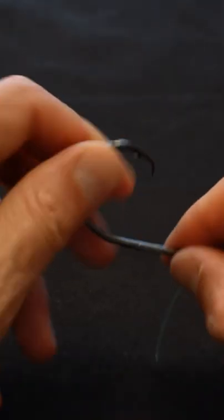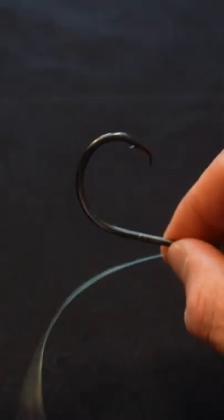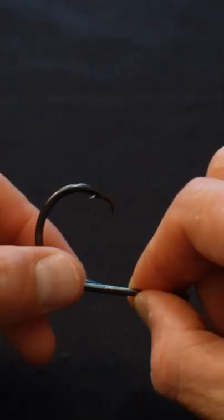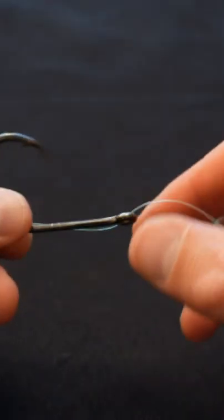The uni knot is just such a great tool in your toolbox when it comes to rigging your gear, snelling hooks, connecting your lines, you name it, it's a great knot.